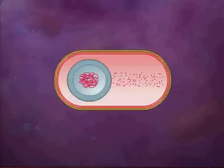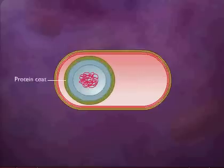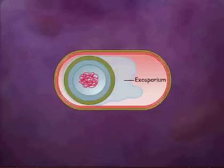A protein coat forms exterior to the cortex and the spore becomes mature. Some spores form an additional layer called the exosporium. A mature spore is resistant to environmental conditions.